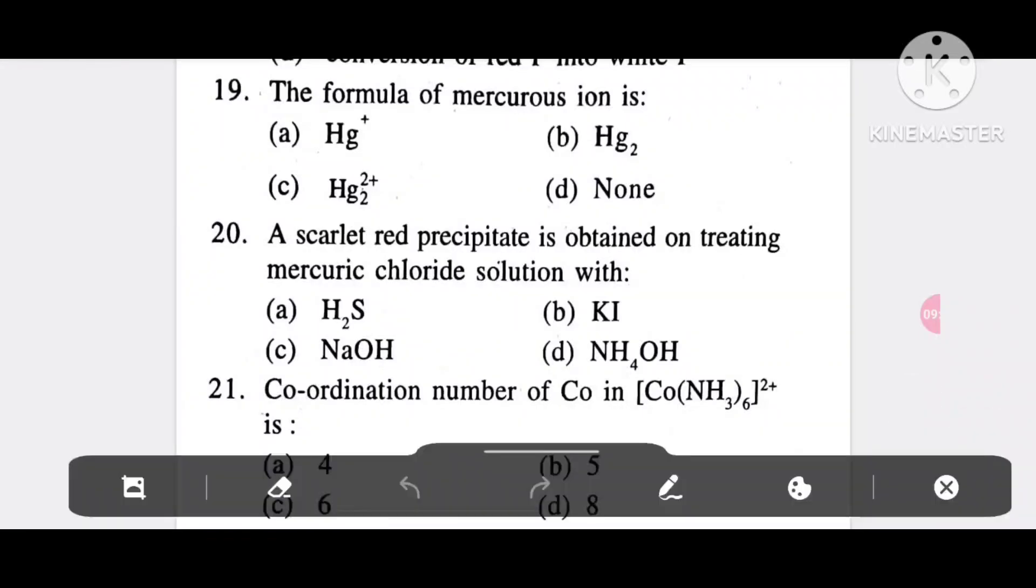Question 19: The formula of mercurous ion is option A, Hg+; option B, Hg2; option C, Hg2^2+; option D, none. It is option C, Hg2^2+. Question 20: A scarlet red precipitate is obtained on treating mercury chloride solution with option A, H2S; option B, KI; option C, NaOH; option D, NH4OH. It is KI, option B.